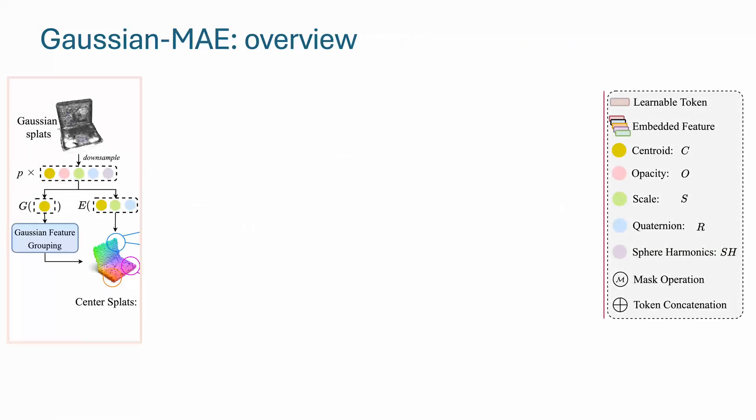We answer these with our Gaussian MAE method. Let's break down our method into three main parts, starting with how we group the Gaussian splats. We begin by downsampling the Gaussian splats and use farthest-point sampling to gather group centers. Then, we do not just use Gaussian centroids for distance calculation at each center.